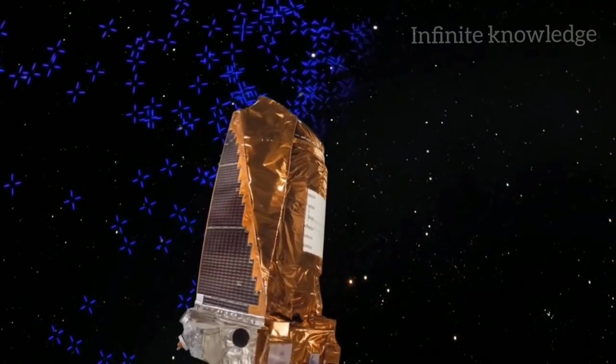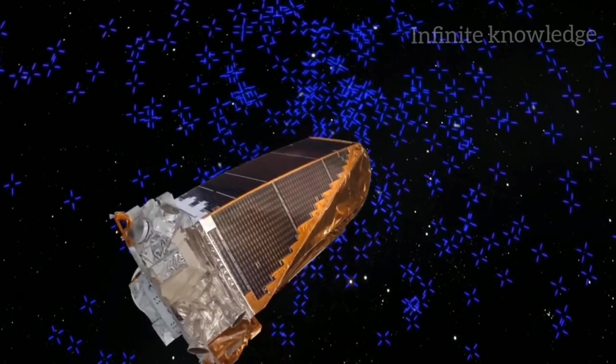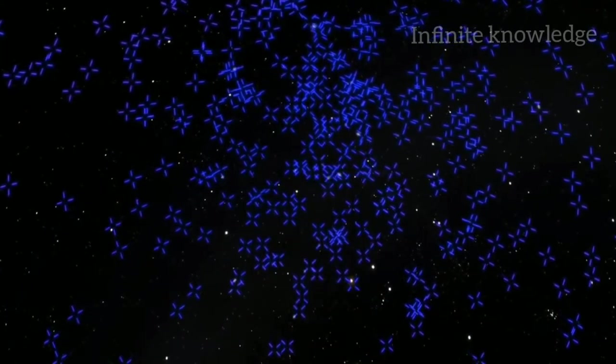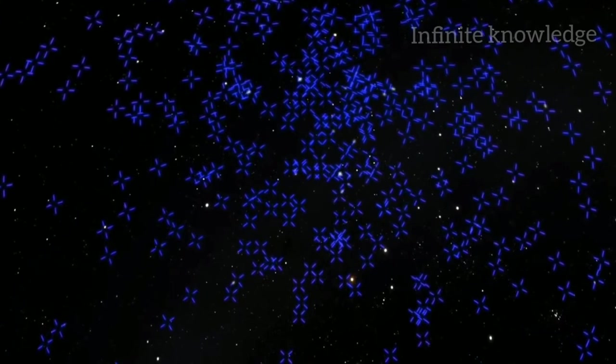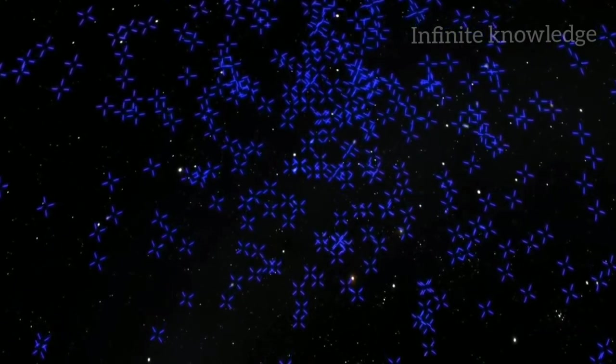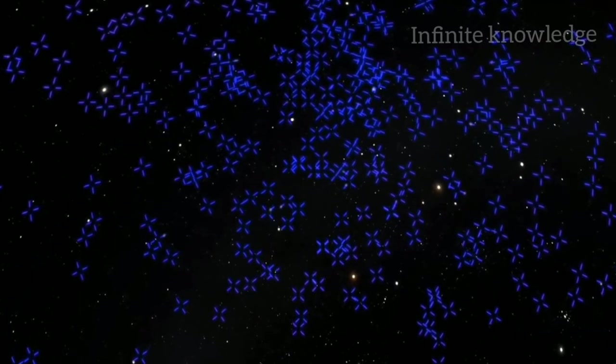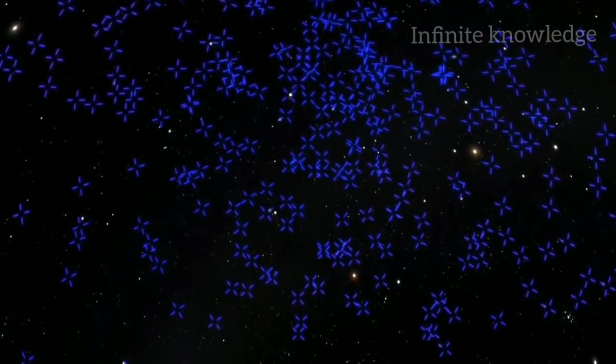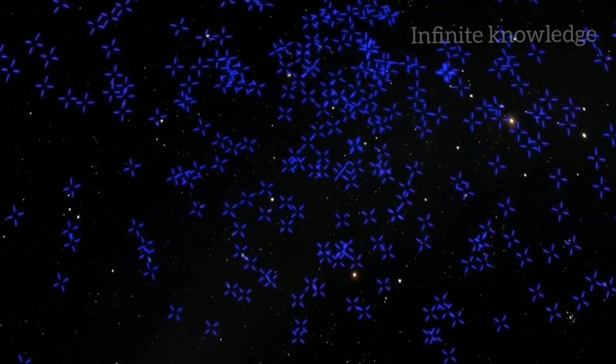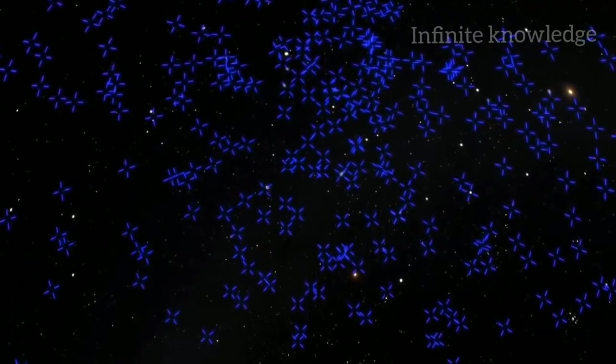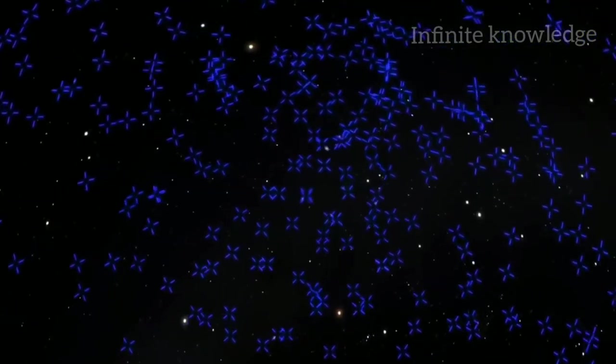Observatories on orbit and on Earth have found evidence of planets orbiting other stars. We need to be able to detect magnetic fields at interstellar distances to identify which planets could have conditions suitable for life.